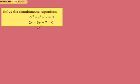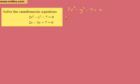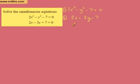We're asked to solve these ones now. This looks as if it's going to get a little messy, but ultimately it shouldn't be too bad, and there are a few different ways you can look at this. I'm going to rewrite the top equation as 2x squared minus y squared plus 7 equals 0. For the bottom one, I'm going to make x the subject: 2x equals 3y minus 7, so x equals (3y minus 7) over 2.